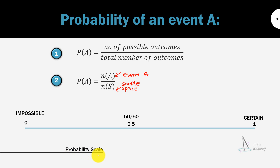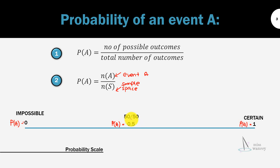Below is the probability scale, which runs from 0 up to 1. If P(A) = 0, the event is impossible — it will definitely not occur. If P(A) = 1, the event will definitely occur. If the probability equals 0.5, it simply means we have a 50-50 chance — it might happen, it might not.